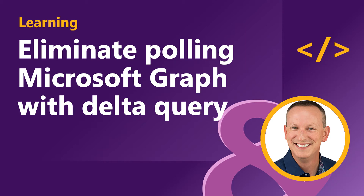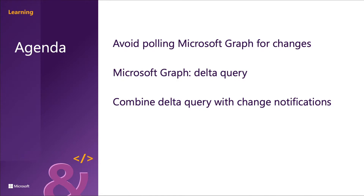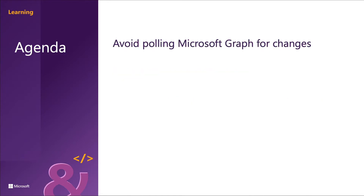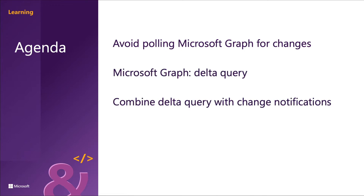In this section, we're going to learn how a Delta query can be used to avoid Microsoft Graph requests from being throttled. We're specifically going to look at how to avoid polling for graph changes, what Delta query is, and then how to combine Delta query with something called a change notification to really cut down the number of requests.